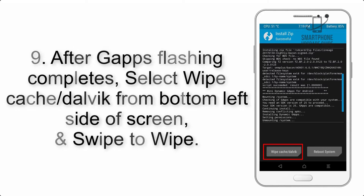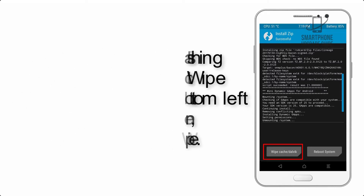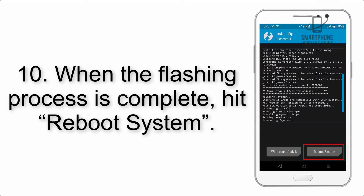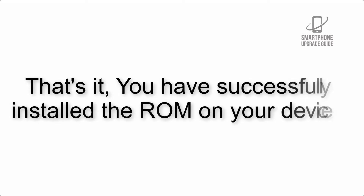Step 8: Flash the GApps zip package in the same manner. Step 9: After GApps flashing completes, select Wipe Cache and Dalvik from the bottom left side of the screen and swipe to wipe. Step 10: When the flashing process is complete, hit Reboot System. That's it — you have successfully installed the ROM on your device.